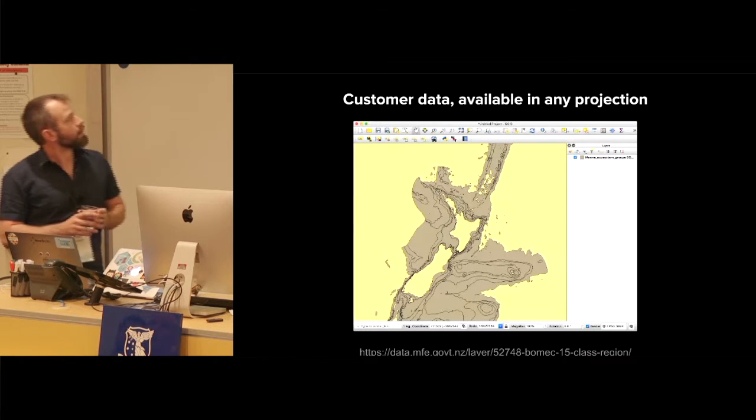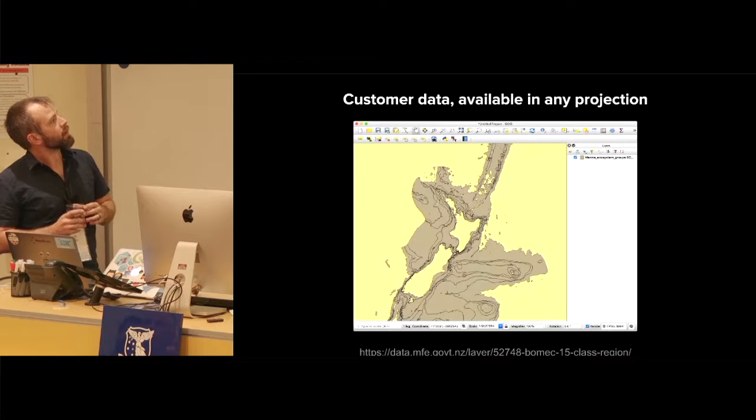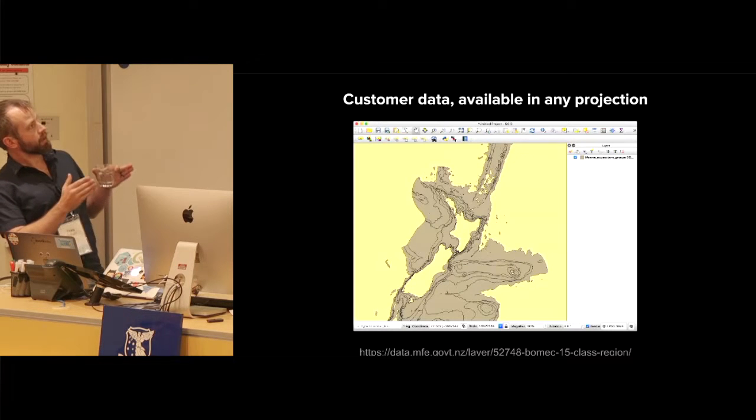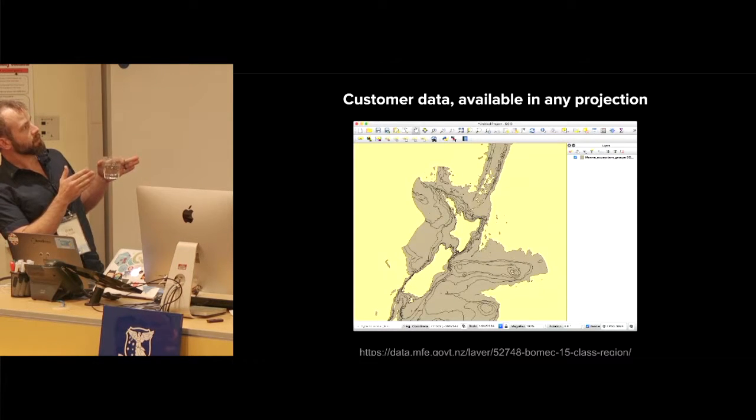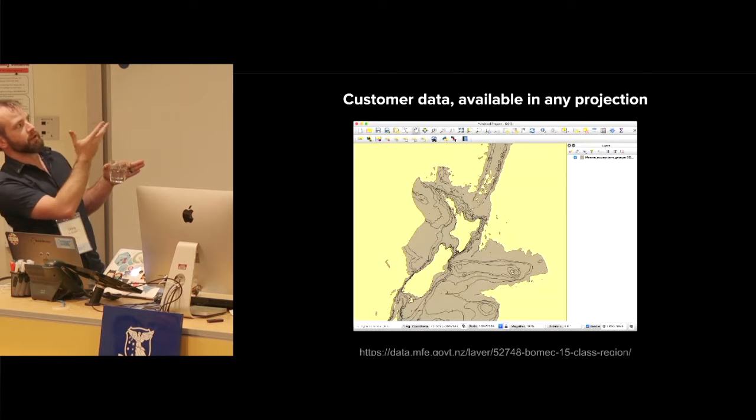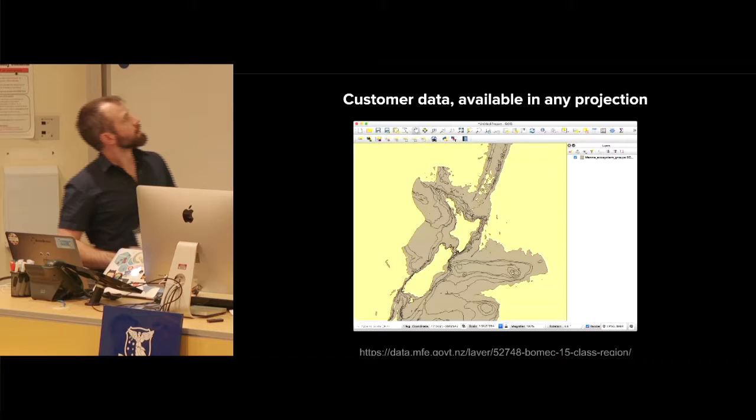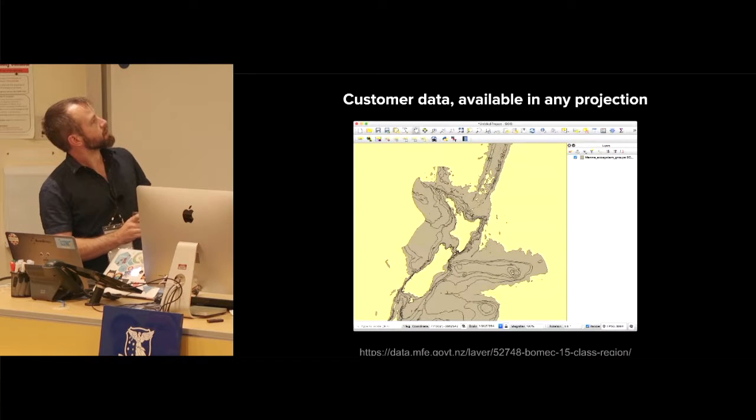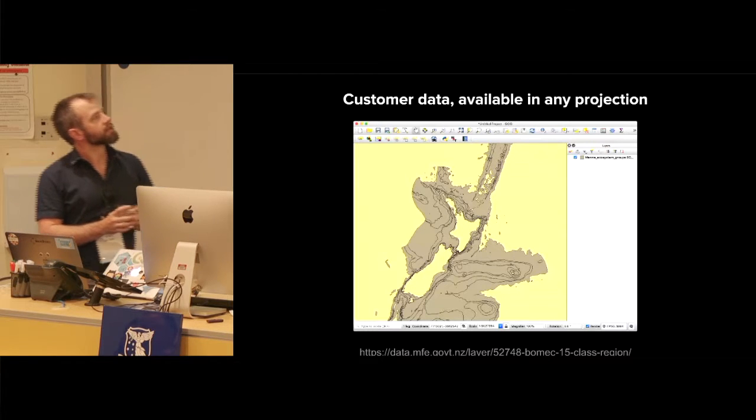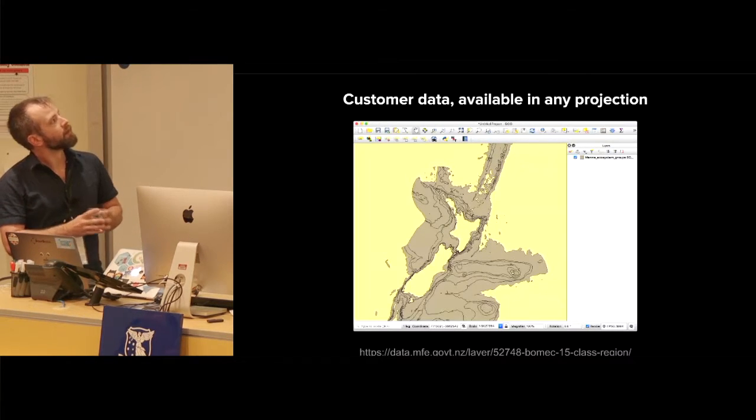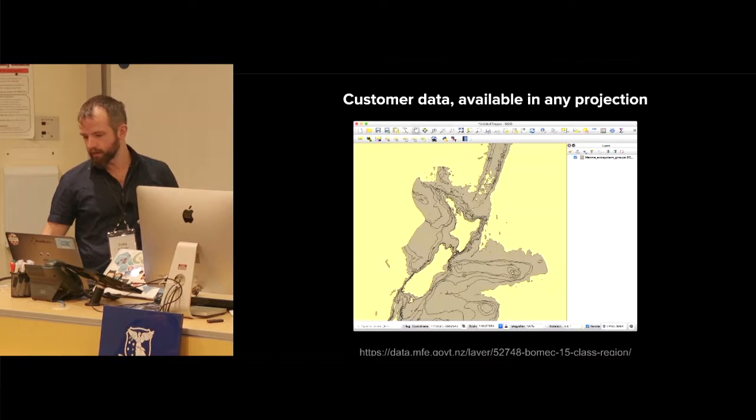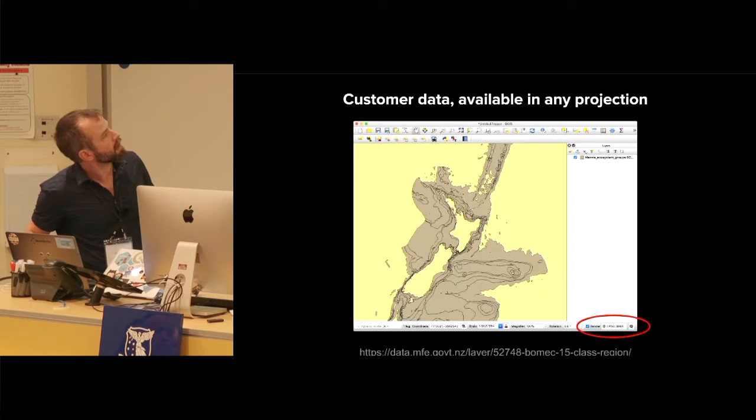Here's a layer. You can go to that URL if you want to see it, but I'm not particularly interested in the data. I'm interested in the geometries because this talks about the anti-meridian. This is provided by MFE, which is a government organization, one of our customers. It's some hydrography class data.